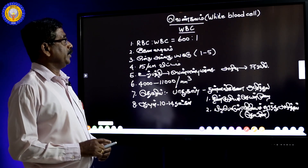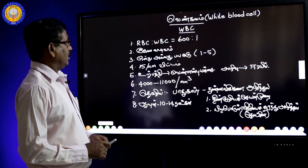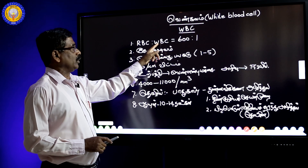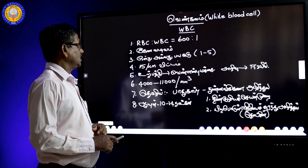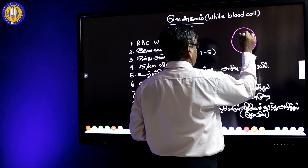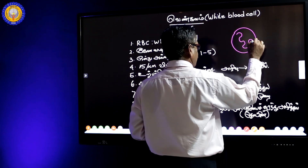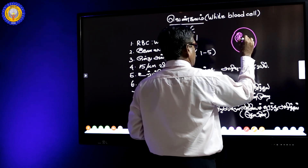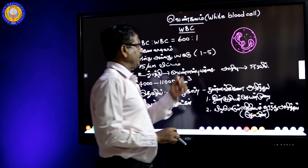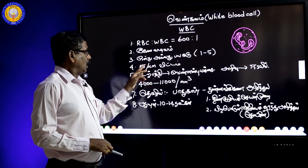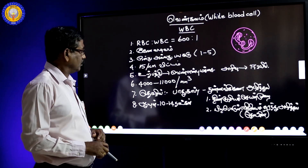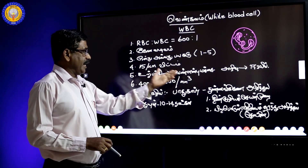This is WBC — White Blood Cell. In this one cell, there is one cell of 600 cells and one cell of one cell. This cell is a cell. If you look at the cell, you can see this cell. There is another cell that is recorded in the micro meter. This is a cell that is presented in the micro meter.